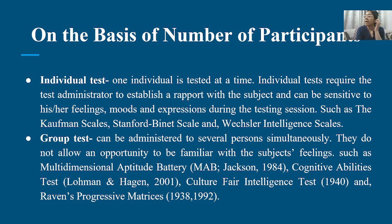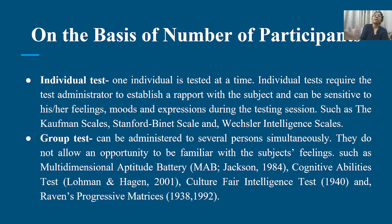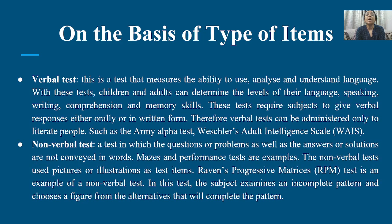The group test can be administered to several persons simultaneously. For example, if there are 20 children in a class, we can administer the test to all of them at once. However, group tests do not allow an opportunity to be familiar with the subject's feelings. Examples include the Multidimensional Aptitude Battery, Cognitive Abilities Test, Culture Fair Intelligence Test, and Raven's Progressive Matrices.